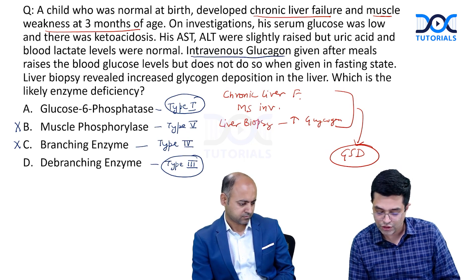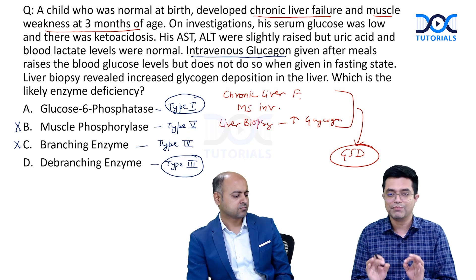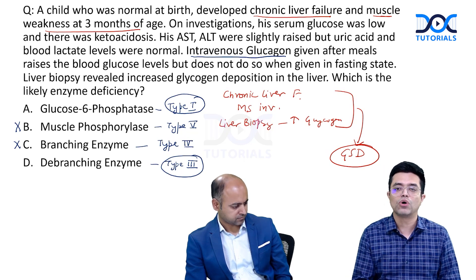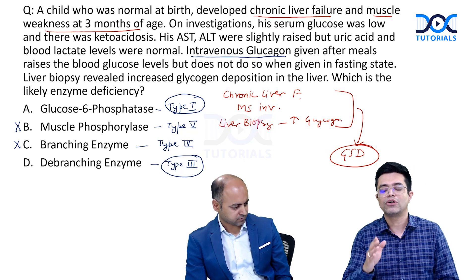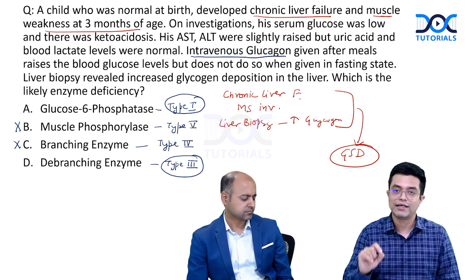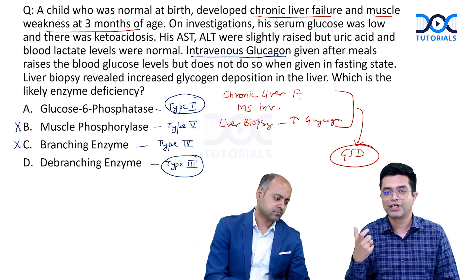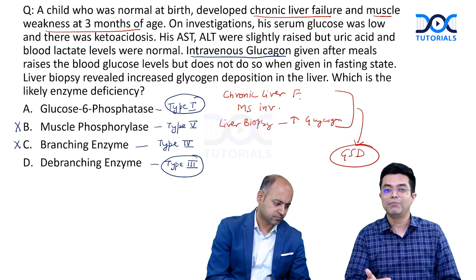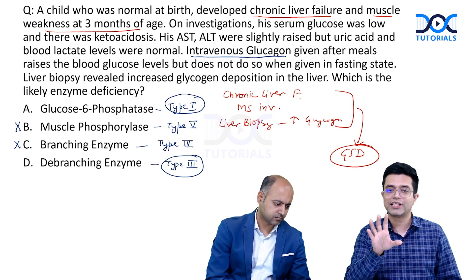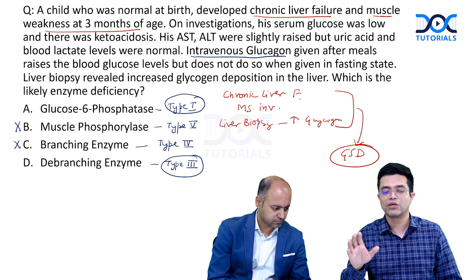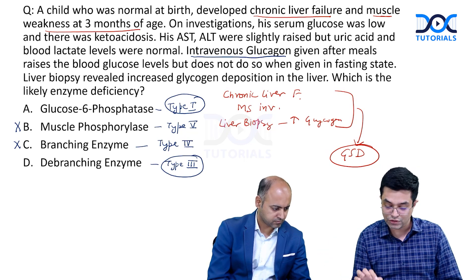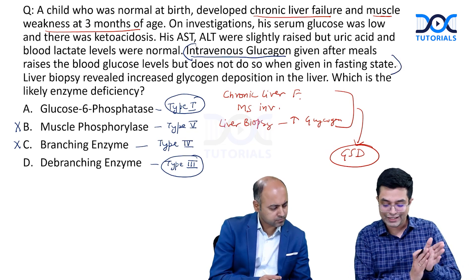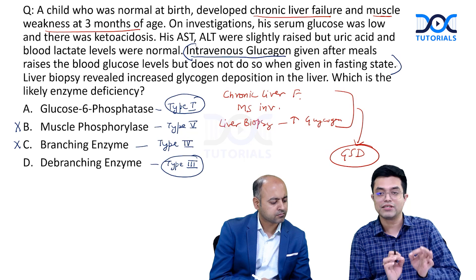To distinguish Type 1 from Type 3, we use the IV glucagon test. In Type 1 (Von Gierke disease), IV glucagon has no effect on blood glucose regardless of meal status. In Type 3, if glucagon is given 2 hours post-meal, blood glucose rises; but if given after 8 hours of fasting, there is no improvement. This is the clinching point in this question — favoring Type 3, debranching enzyme deficiency.